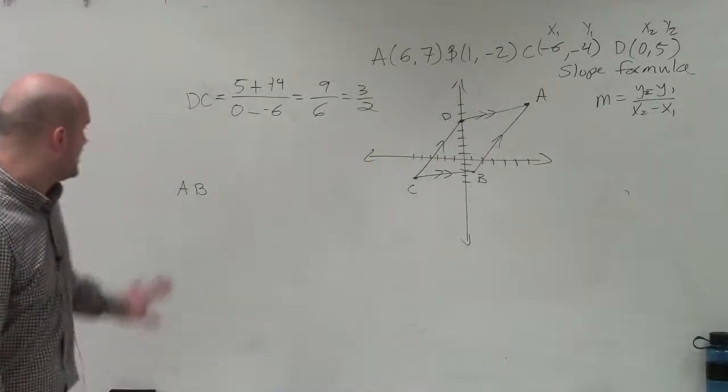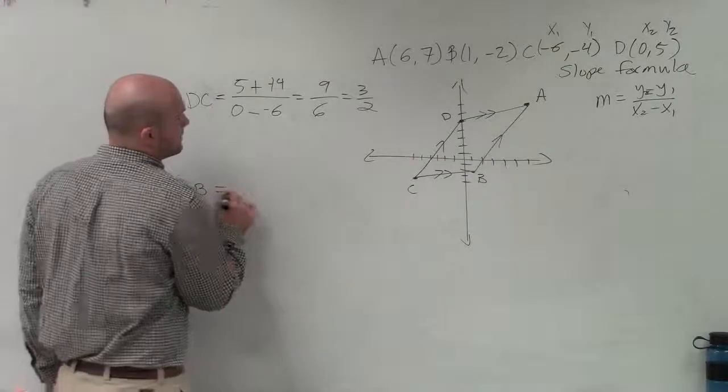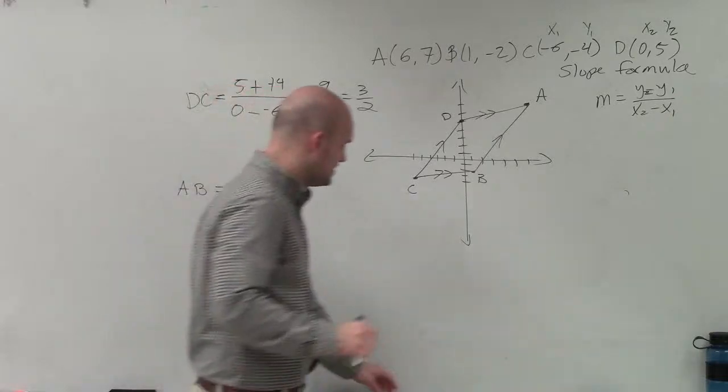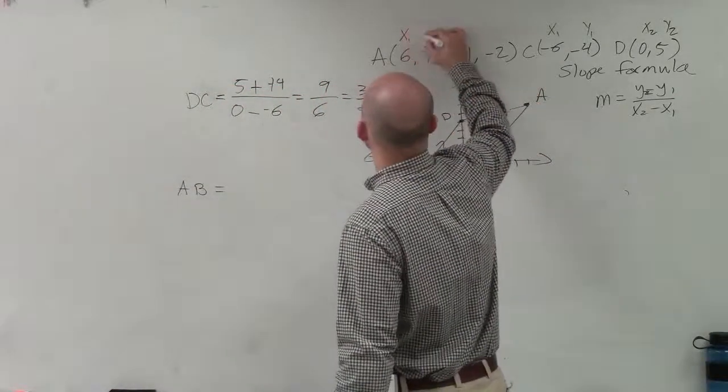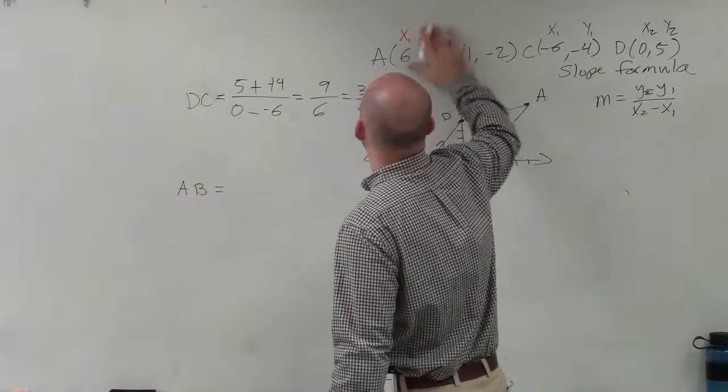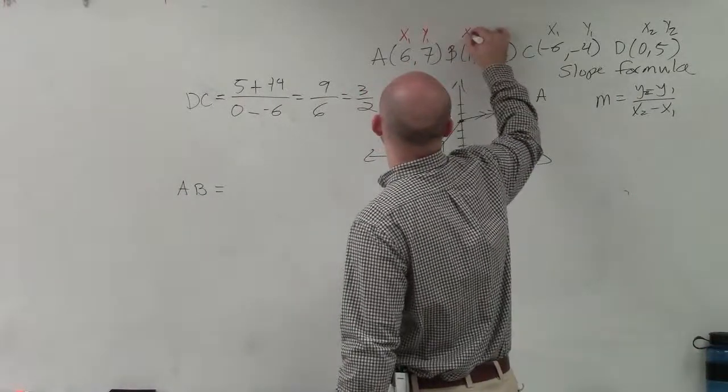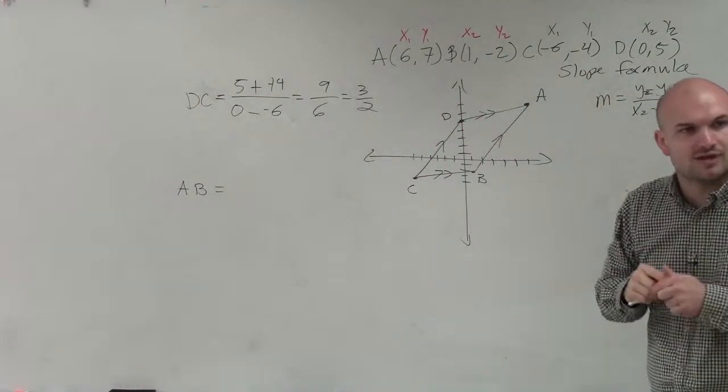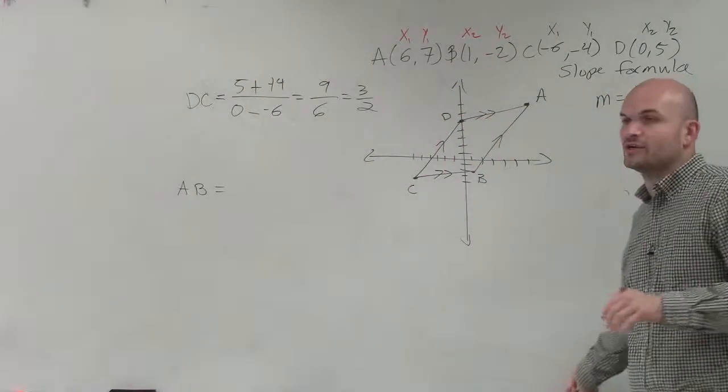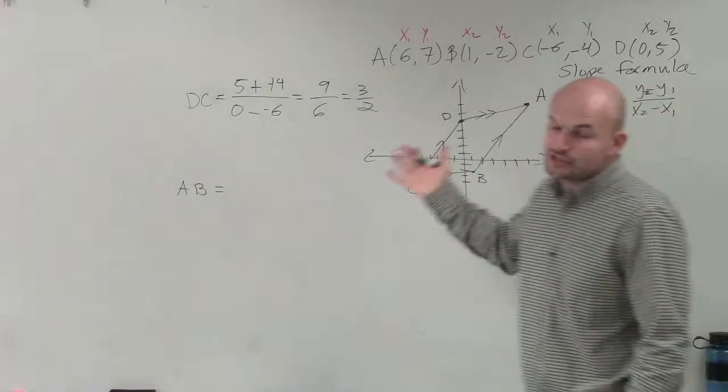All right, now I go ahead and determine AB. So for AB, again, I need to determine what is my x1 and my y1. So I'll say that's x1, that's y1. This will be x2 and y2. And again, guys, it doesn't really matter what you label as your x1 and y1 or your x2 y2s. You just need to make sure you're consistent.